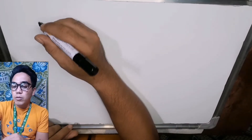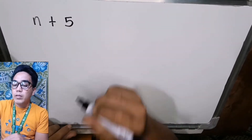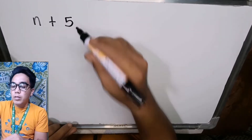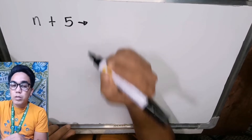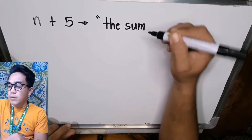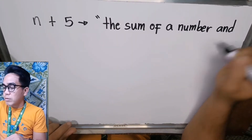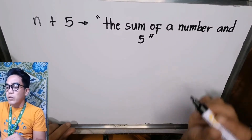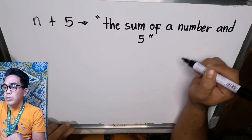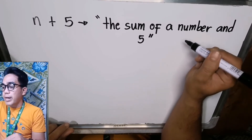First, let's look at addition. When you hear the word addition, the keyword is 'sum.' So let's say we have n plus five — the symbol plus means addition. In translating it into a word phrase, we simply use the word 'sum.' In short, we have 'the sum of a number and five.' We use the phrase 'a number' in general, since whatever variable you use can be referred to as a number.